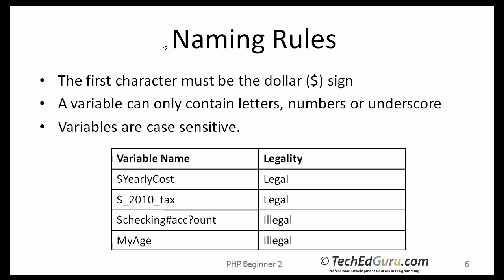Naming rules. The variable names in PHP must begin with a dollar sign. A variable can only contain letters, numbers, or underscores. It can't contain any periods or mathematical operators, and must not be the name of a PHP keyword. Variable names are case sensitive in PHP. Here are a few examples: dollar sign yearly_cost — that's legal. A variable name containing underscore is legal. But a variable name containing a pound sign or a question mark is not legal. My age would be fine if you put the dollar sign in front of it, but without it, it is illegal.